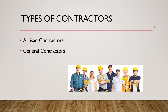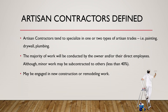We're going to start with artisan contractors and discuss the difference between artisan contractors and general contractors. Artisan contractors tend to specialize in one or two types of trades such as painting, drywall, roofing, or electrical. The majority of work will be conducted by the owner and/or their direct employees, although they can have a small amount of subcontracted work — that should be less than 40 percent. They may be engaged in new construction or remodeling work.